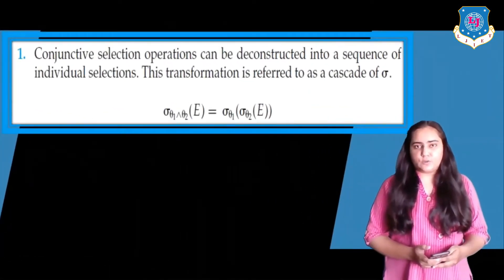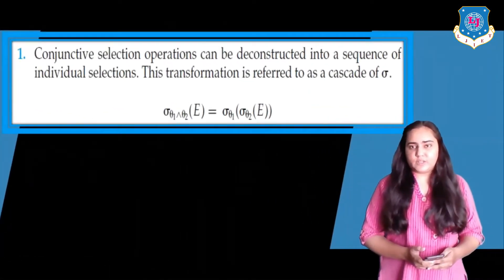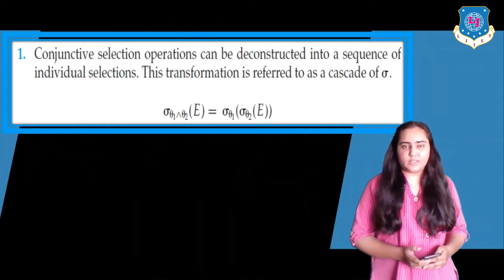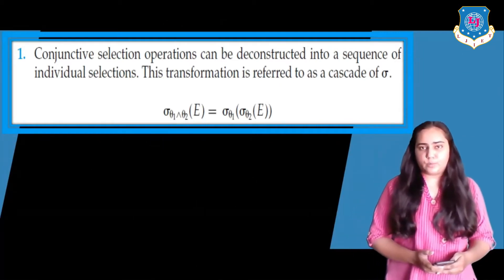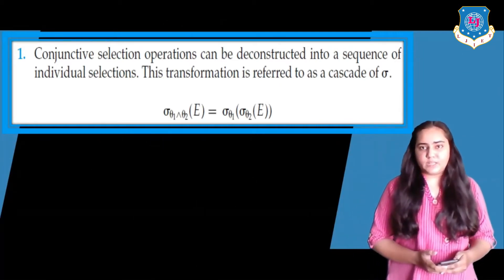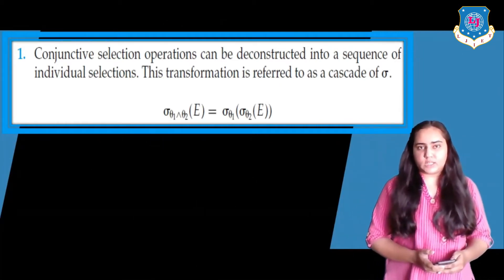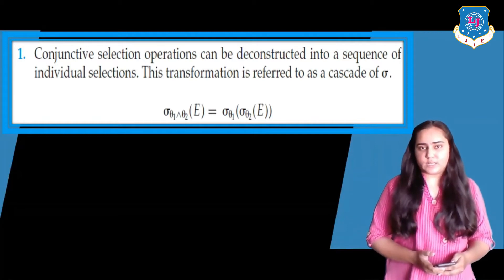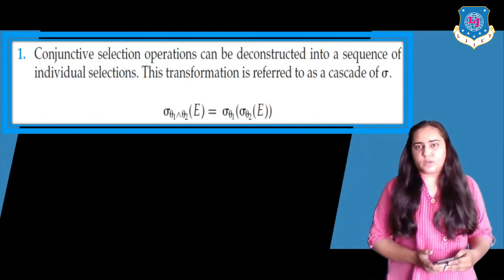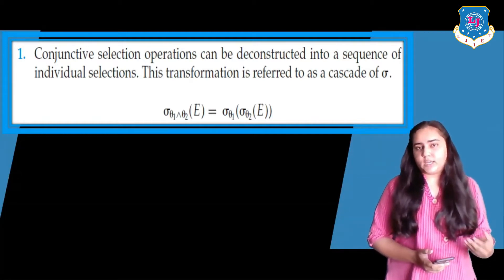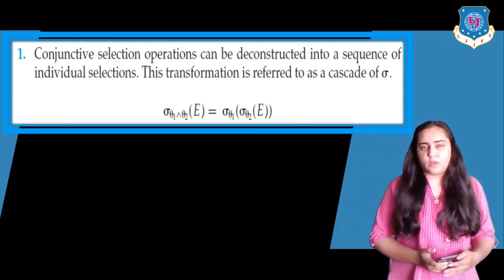This is the first rule and it's a very simple rule. It says that conjunctive selection operations can be deconstructed into a sequence of individual selections, and this transformation is known as a cascade of sigma.